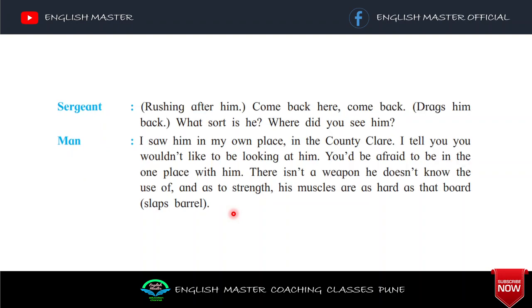Sergeant, rushing after him: 'Come back here!' Drags him back. 'Where did you see him?' Man: 'I saw him in my own place, in County Clare. I tell you — you would be afraid to be in the one place with him. There isn't a weapon he doesn't know the use of, and such strength — his muscles are as hard as that board.' Slaps barrel. Agar tum ek saath us insan ke saath kahi pe hoge to tum dar jaaoge — uske muscles bahut powerful hain.